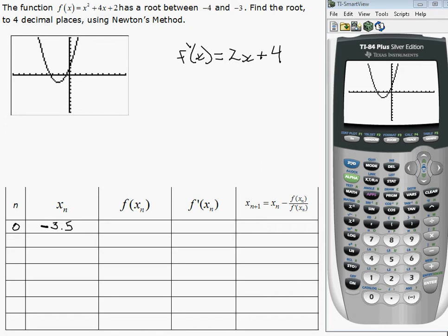So if we go over to our calculator now, we want to calculate the value of our function at negative 3.5. And the answer is 0.25. So 0.25.